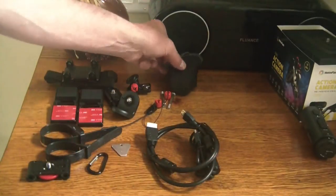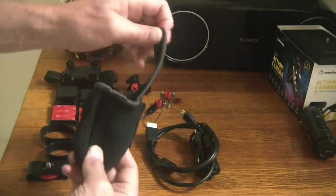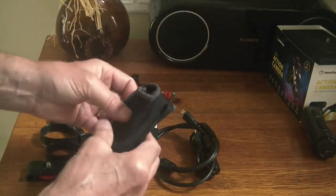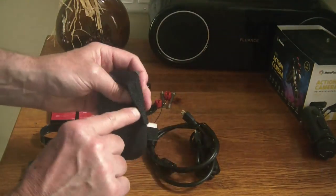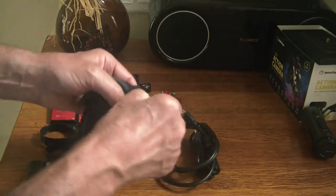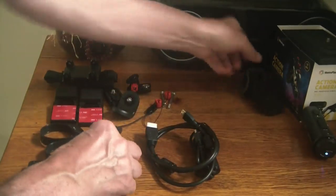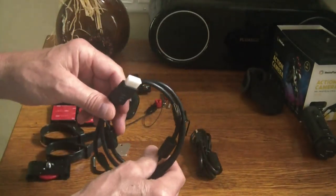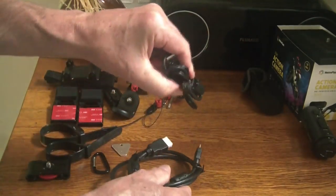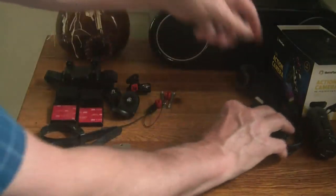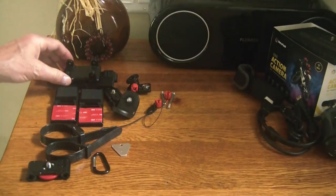You get a ton of accessories with the camera. You get this neoprene pouch for camera storage. It doesn't really have a belt loop on it per se but it does have a nylon loop and you can use the carabiner to attach that to something if you wish. You get a USB cable charging data cable, you also get an HDMI cable and then you get a variety of mounts.